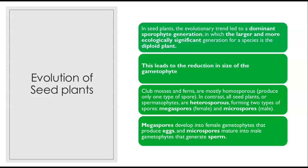When we talk about the club mosses and ferns — the seedless vascular plants — they're mostly homosporous, meaning they produce only one type of spore. In contrast, all seed plants, or spermatophytes, are heterosporous, meaning they form two types of spores: megaspores, which are female, and microspores, which are male. Megaspores develop into female gametophytes that produce eggs, and microspores mature into male gametophytes that generate sperm.